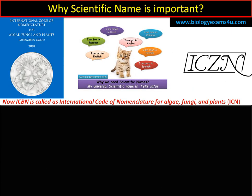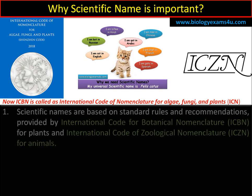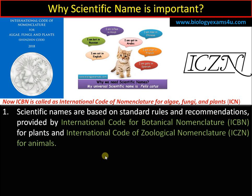The scientific name is put forward in accordance with rules and regulations set by ICBN and ICZN. ICBN stands for International Code for Botanical Nomenclature — now called ICN, the International Code of Nomenclature for algae, fungi, and plants. For animals, the code is provided by ICZN, the International Code of Zoological Nomenclature.